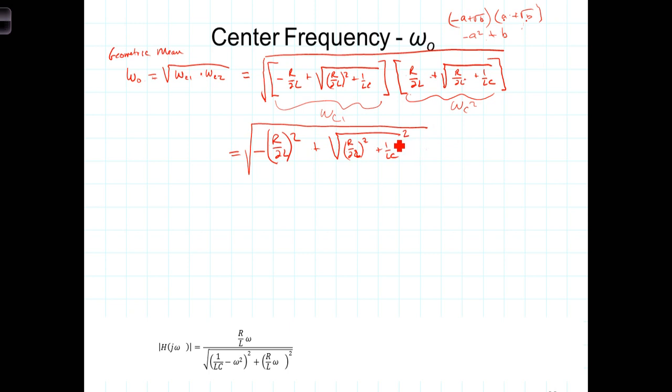Now, this squaring on the radical undoes the radical, which leaves us then under this big overriding radical, negative R over 2L plus, undoing the radical here leaves us, I'm sorry, this is R over 2L quantity squared plus R over 2L quantity squared plus 1 over LC.